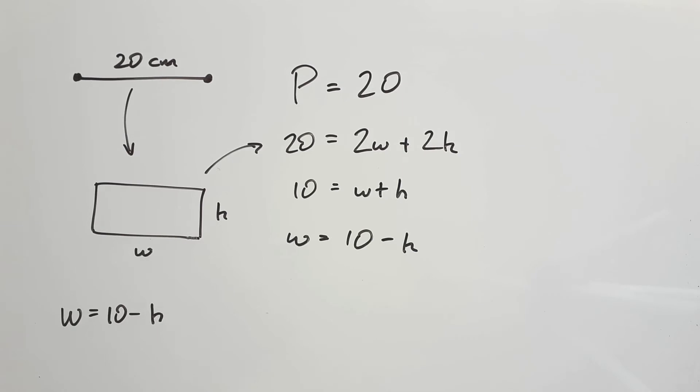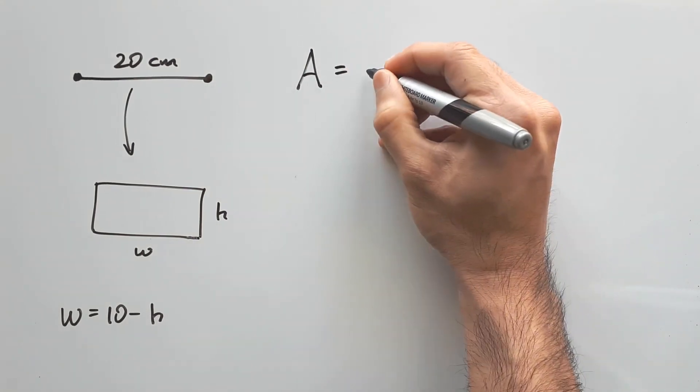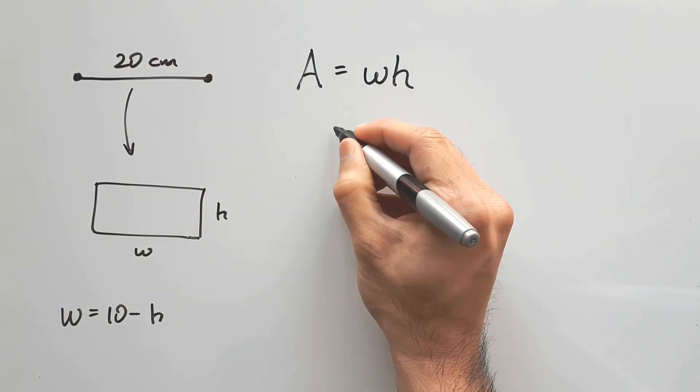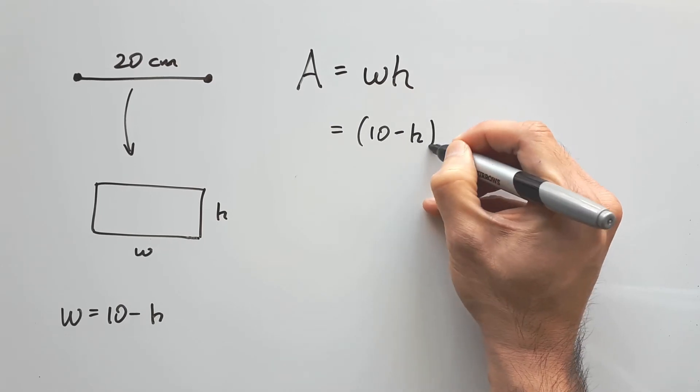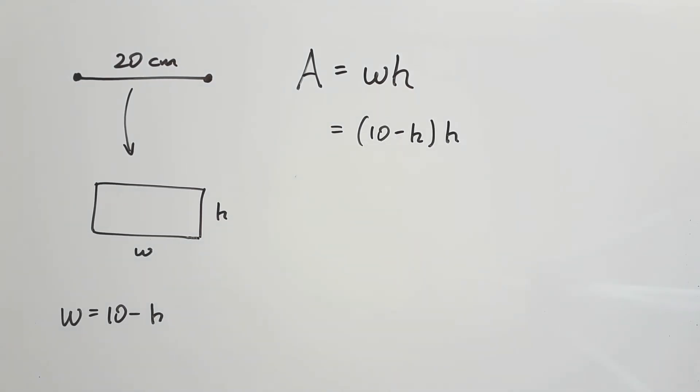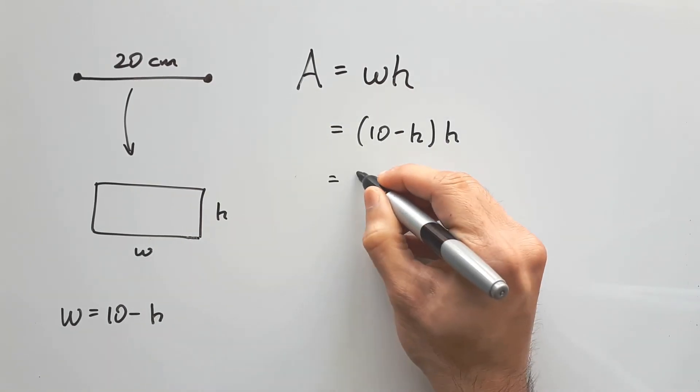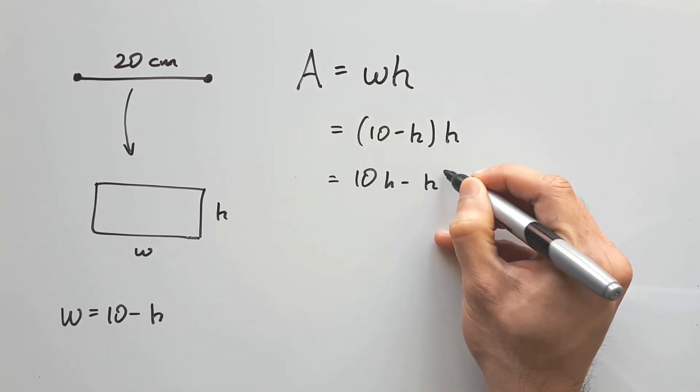Now let's address the main character of the story, the area equation. The area of this rectangle is the product of its width and height. Using our support equation, we can substitute W for 10 minus h, which expands into 10h minus h squared.